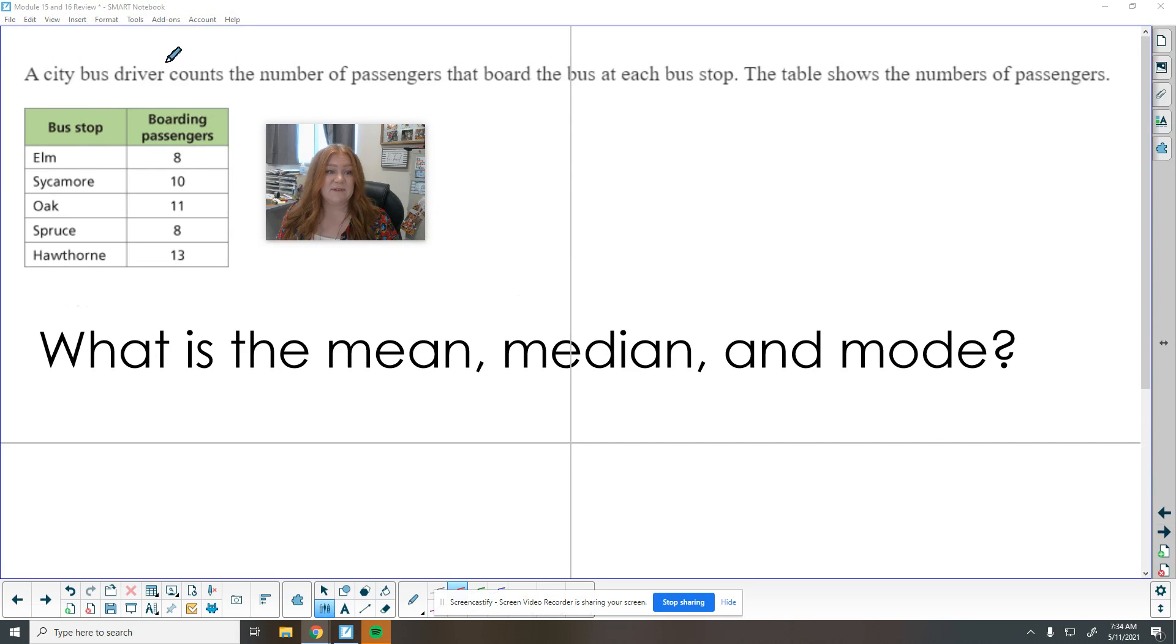Here we have this bus driver is counting the number of passengers at each bus stop that get on the bus. And so here are their five different bus stops and how many passengers got on. So we're going to find the mean, the median and the mode. Since we're looking at all of that data, let's go ahead and put these in order.